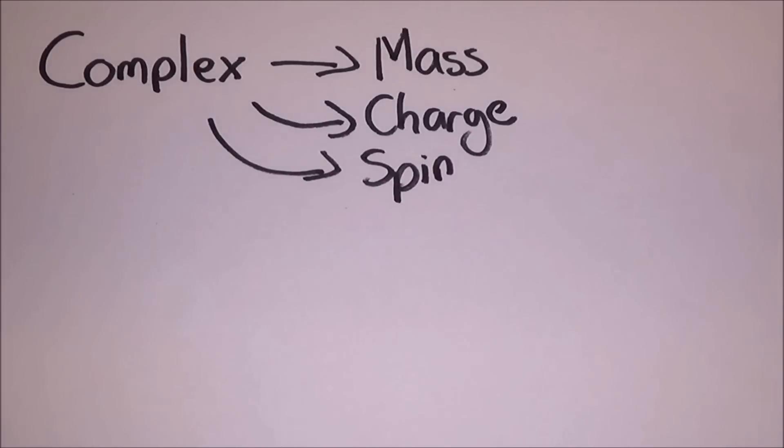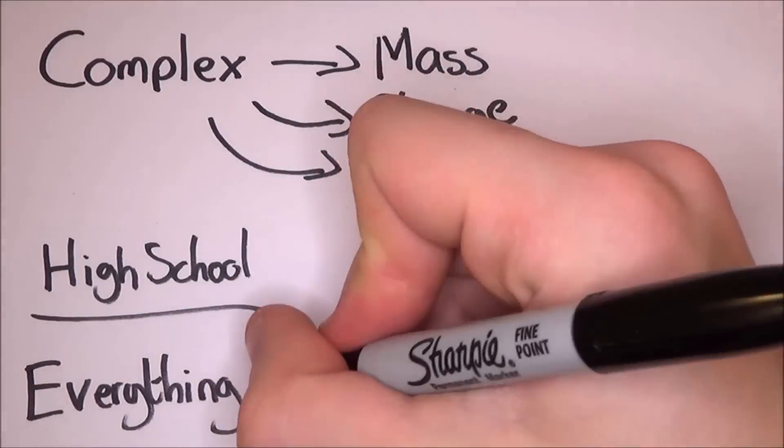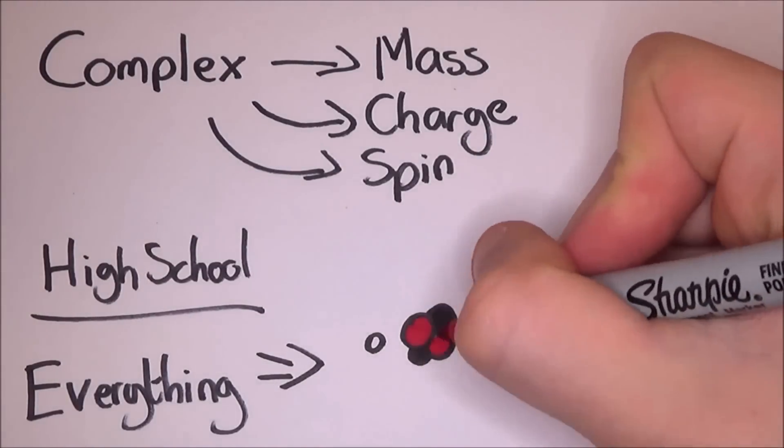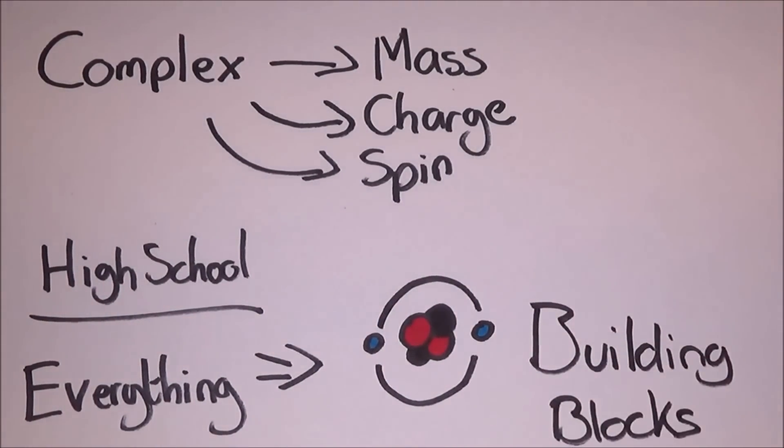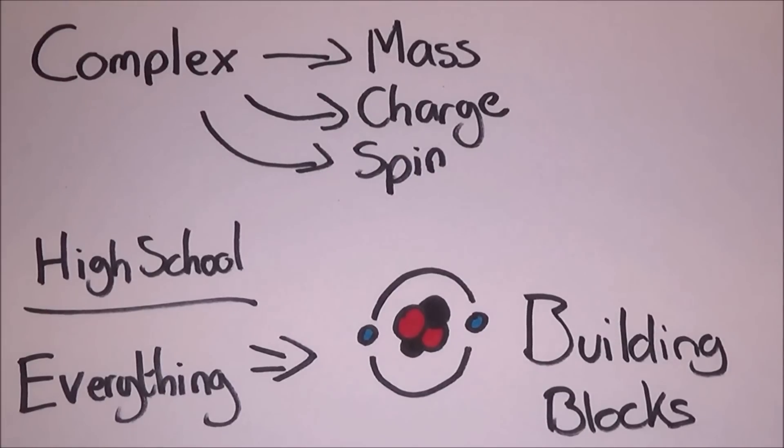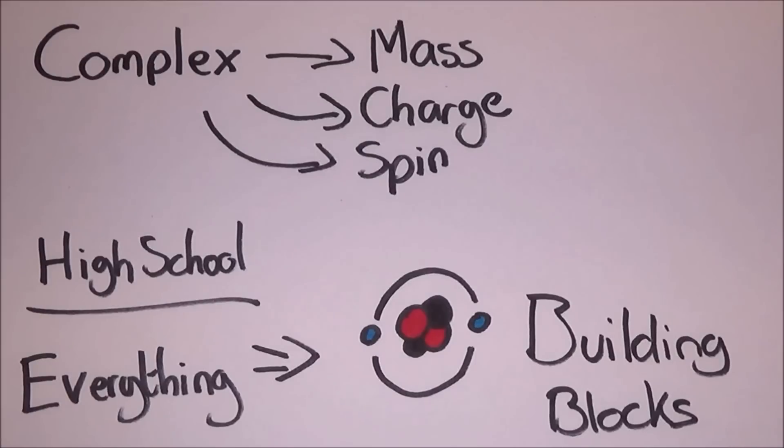To get your head around this, we need to remember what we've learnt when we were 13 years old or so. Everything is made up of atoms. Atoms are then split into three parts: electrons, protons and neutrons. Now these are the building blocks of all matter, well visible matter anyway.